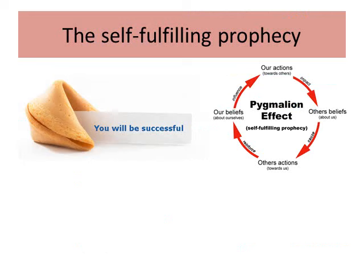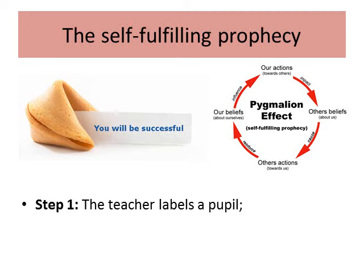Next we need to be aware of the self-fulfilling prophecy, as it links closely to labelling. A prophecy is essentially a statement that says something is going to happen. When something is a self-fulfilling prophecy, it will come true simply because the statement that it will come true has been made. In terms of education, it works in three stages.